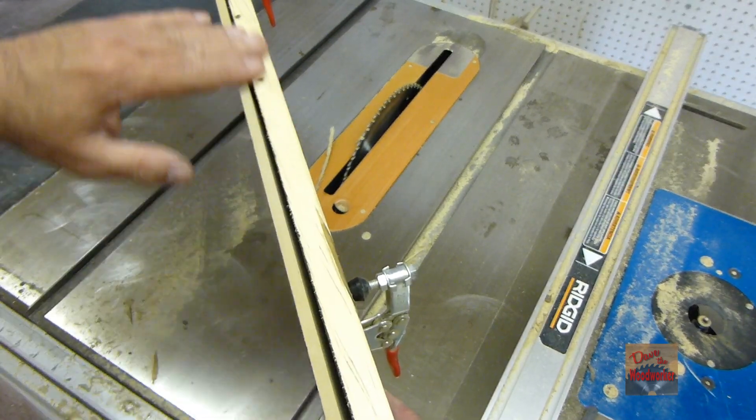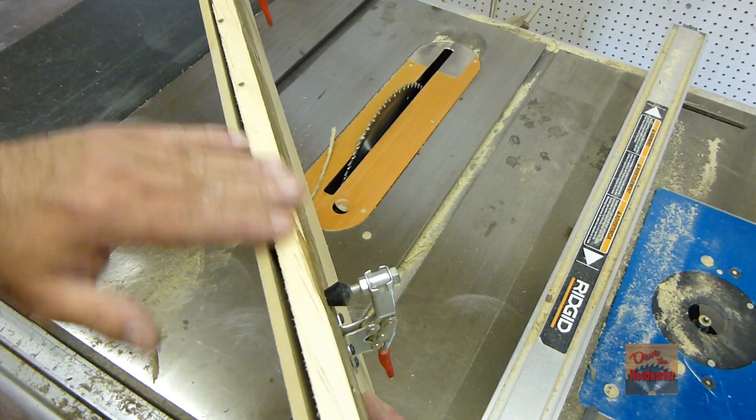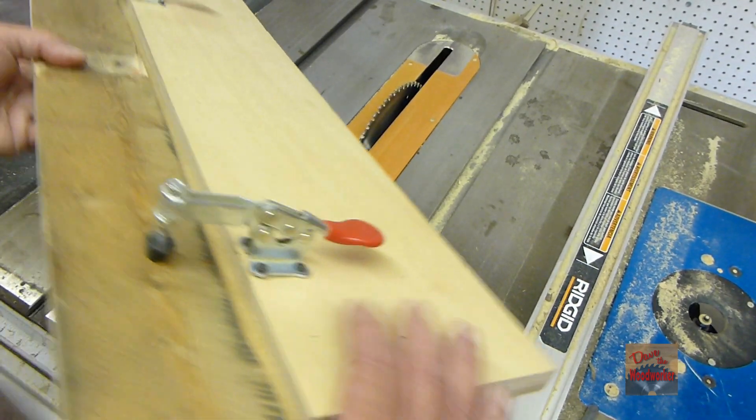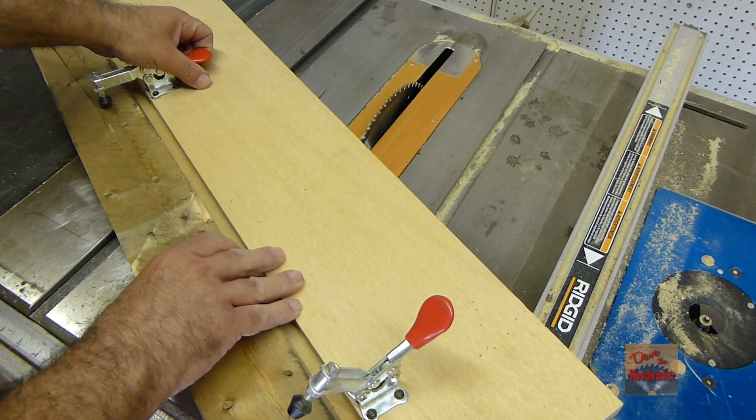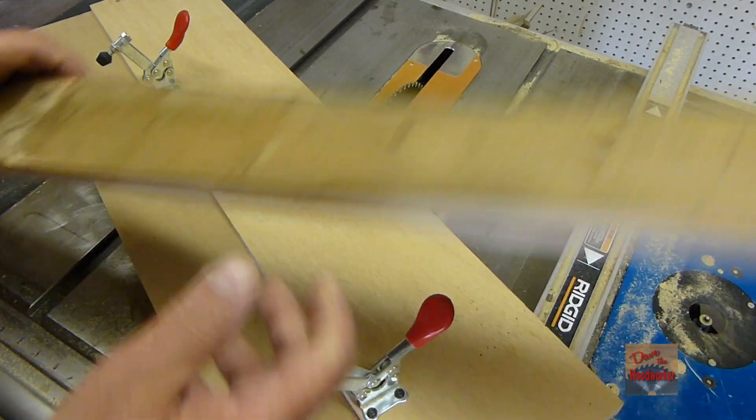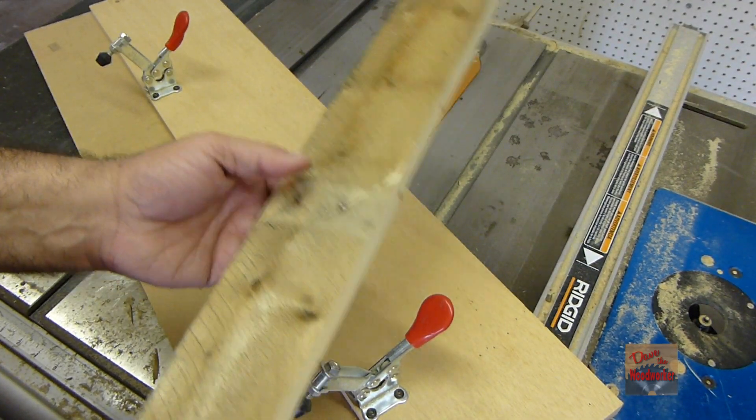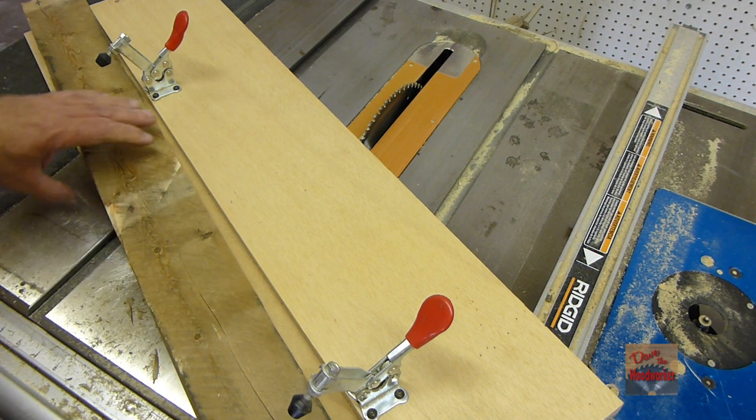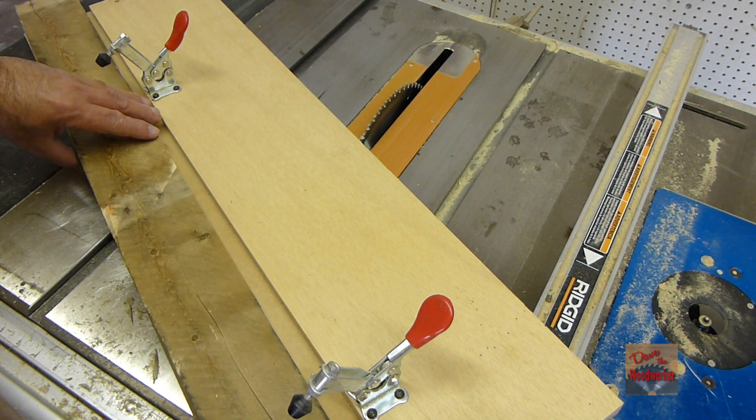Now you can see we've got a nice straight edge on it. And if you wanted to you can put this against your rip fence now. Or you can flip it over and line it up again to cut it off.